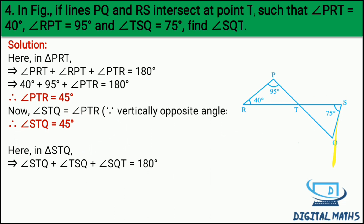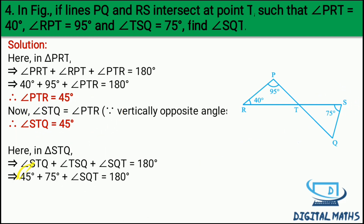So 45 + 75 + angle SQT = 180 degree. Therefore angle SQT = 180 minus 75 minus 45 = 60 degree. Calculation main nahi kar raha hoon, aapko calculation karni hai taaki aap apne aap sure ho jao ki answer correct hai. This was Question 4. Kahi doubt hai to comment section mein comment karo.